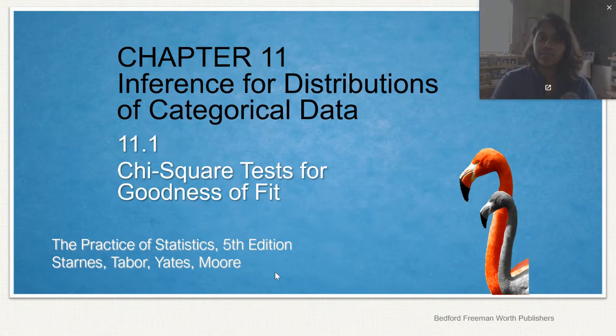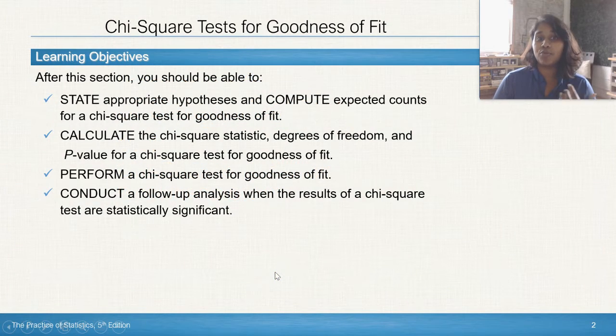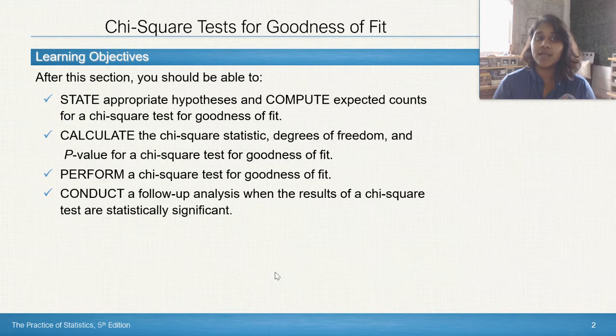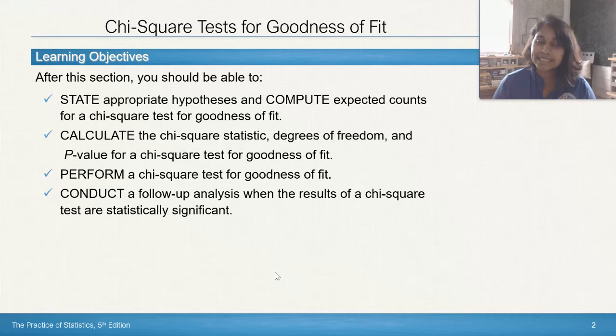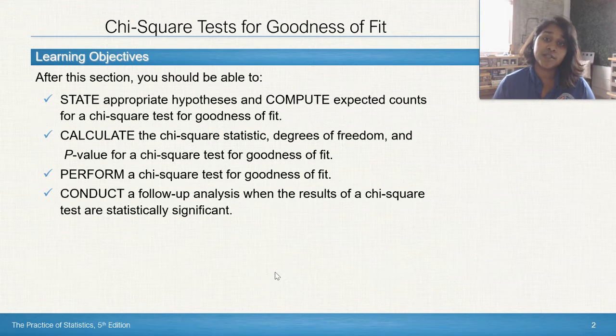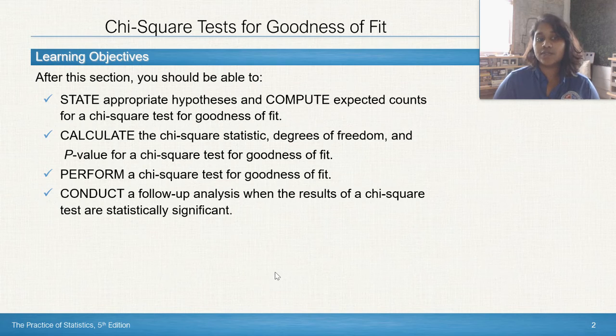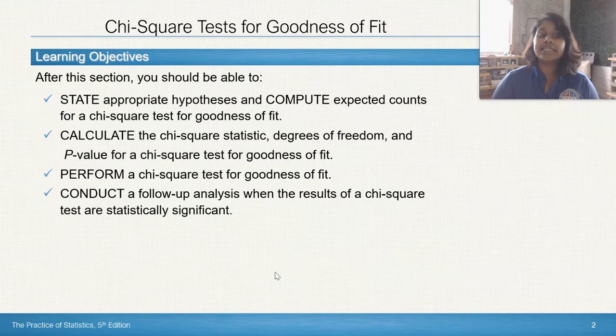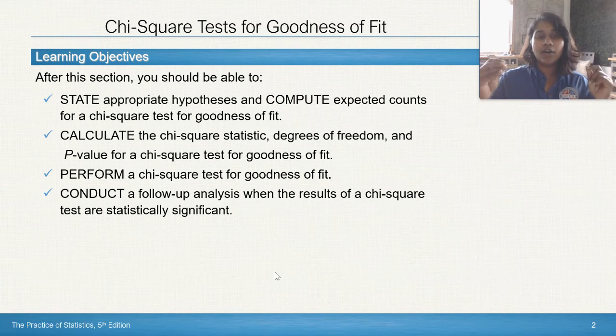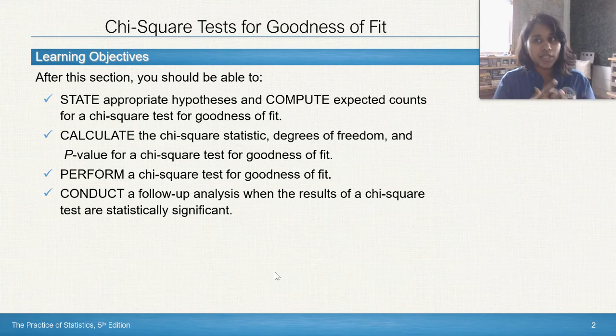In this particular video, I want to cover how we state appropriate hypotheses, how we're going to actually calculate and compute expected counts for a chi-square test for goodness of fit. We're actually going to calculate a chi-square statistic. We're going to figure out how to do degrees of freedom for this section's chapter and what a p-value looks like for a chi-square test for goodness of fit. We're going to perform a chi-square test for goodness of fit and conduct a follow-up analysis when the results of chi-square tests are statistically significant. Those last two are more hand-in-hand in the part two video, just so you know.